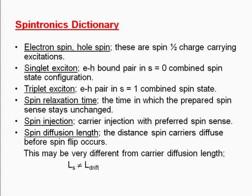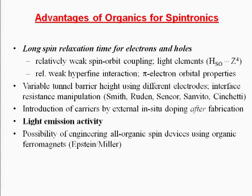First of all, a spintronics dictionary. The electron spin and hole spin are spin one-half charge-carrying excitations. If they meet, a singlet exciton can be formed, but also a triplet exciton. Spin relaxation time is the time during which the prepared spin sense stays unchanged. Spin injection is the property that carriers with a preferred spin sense are injected into the organic. Spin diffusion length is the distance spin carriers diffuse before a spin flip occurs, and this can be very different from the drift diffusion of the origin.